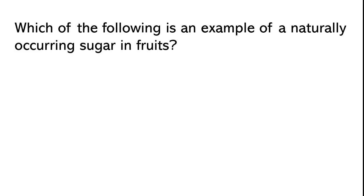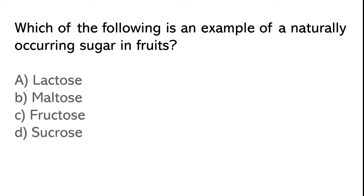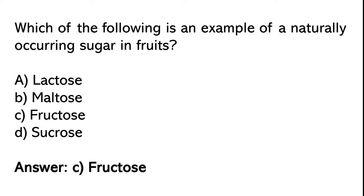Which of the following is an example of naturally occurring sugars in fruits? Lactose, maltose, fructose, sucrose. The correct answer is option C: Fructose.